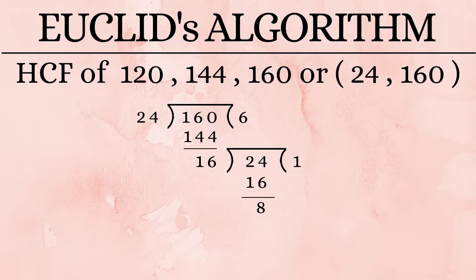So next step, we bring down the new dividend, 16. So 16 divided by 8 divides perfectly to give us a remainder of 0. So with that, we stop and make our last divisor as our final answer. Thus the HCF of 120, 144, and 160 is 8.